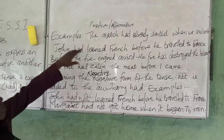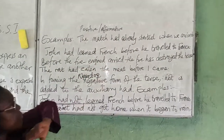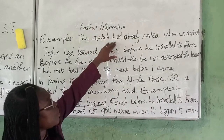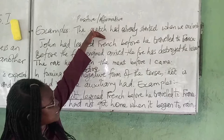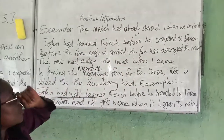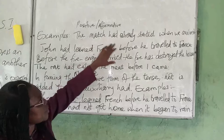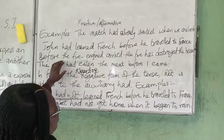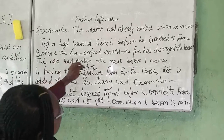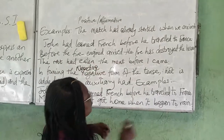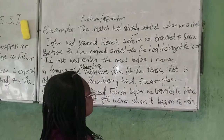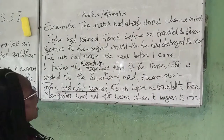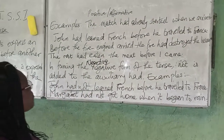Again: 'The match had already started when we arrived,' meaning we were planning to watch the match, but when we came, the match had started before we arrived. So 'the match had already started,' 'John had learned French before traveling to France,' and 'the fire had destroyed the house' are all in the past perfect tense.